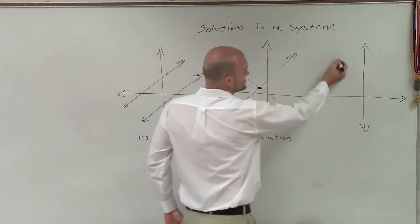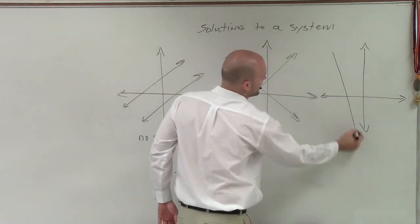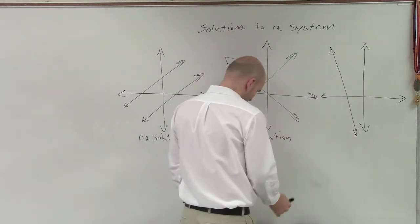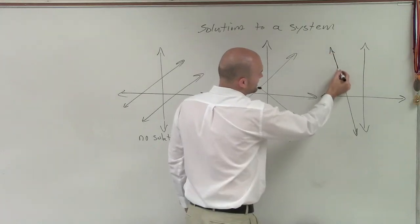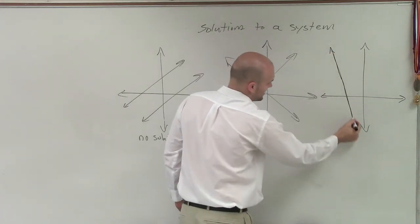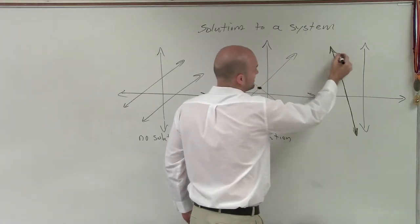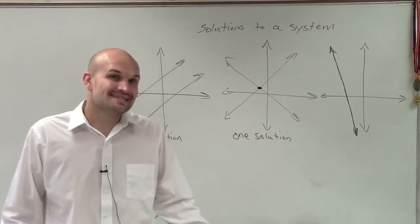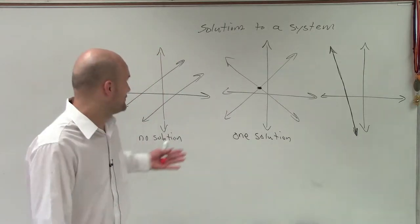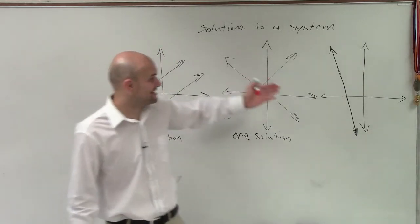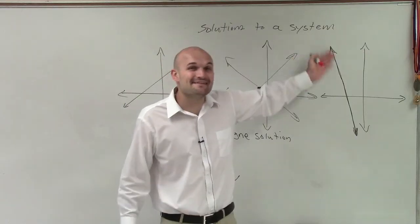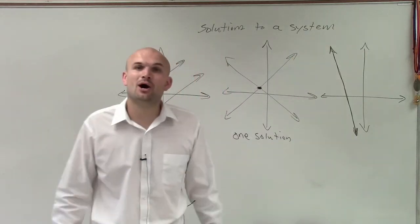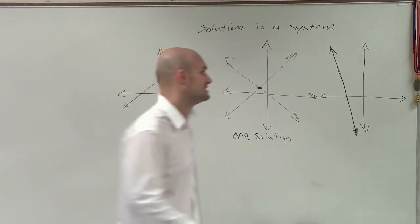The next possibility is: what if I have two lines but they are exactly on top of each other, meaning they're the same line? In this case, they don't intersect at just one point — they intersect at infinitely many points. So this is what we call infinitely many solutions.